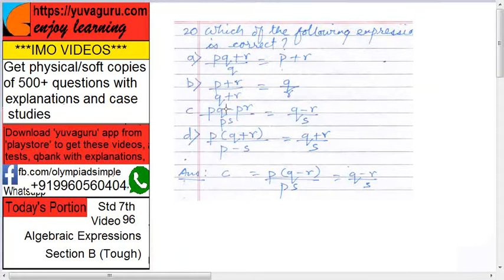C - this is something which can work. Take p common out, so p into (q minus r) upon s. This p is as it is, p gets cancelled, q minus r upon s, right. So C is the correct answer. Even D cannot be solved.